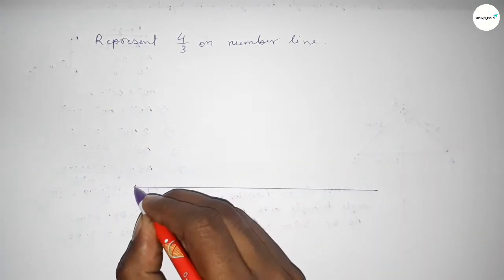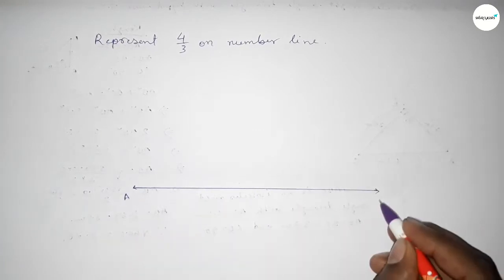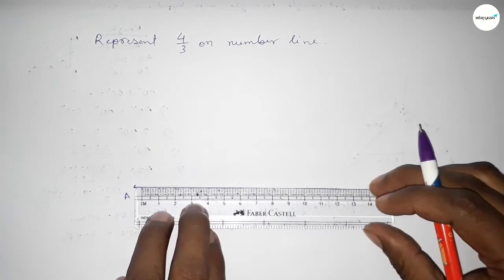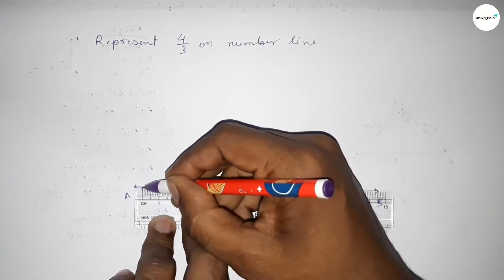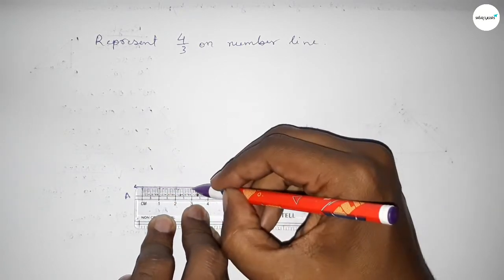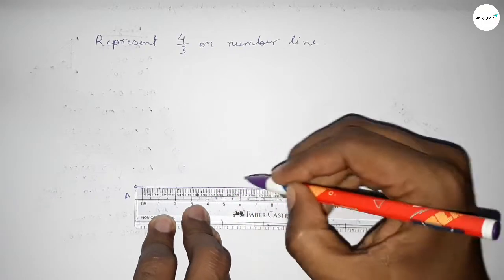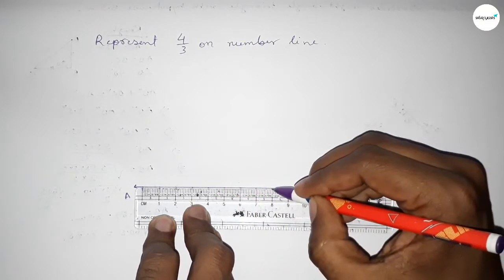And this is AB line. Next, we have to mark the numbers on the line by using scale by this way. So first we have to mark the numbers on the line.